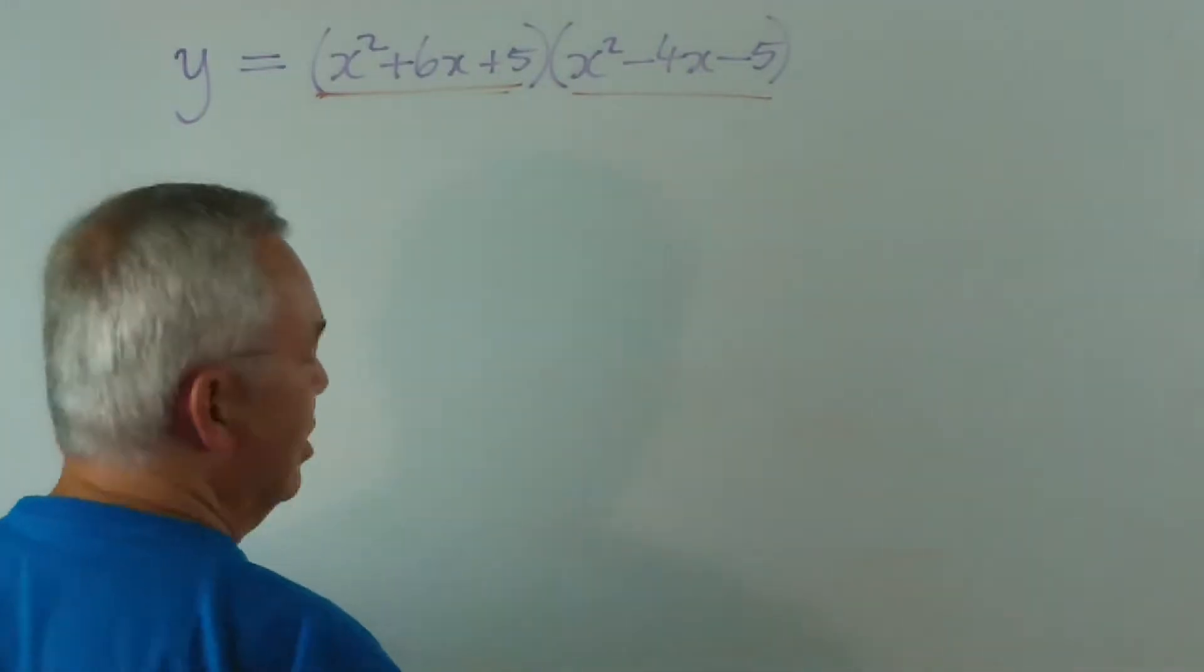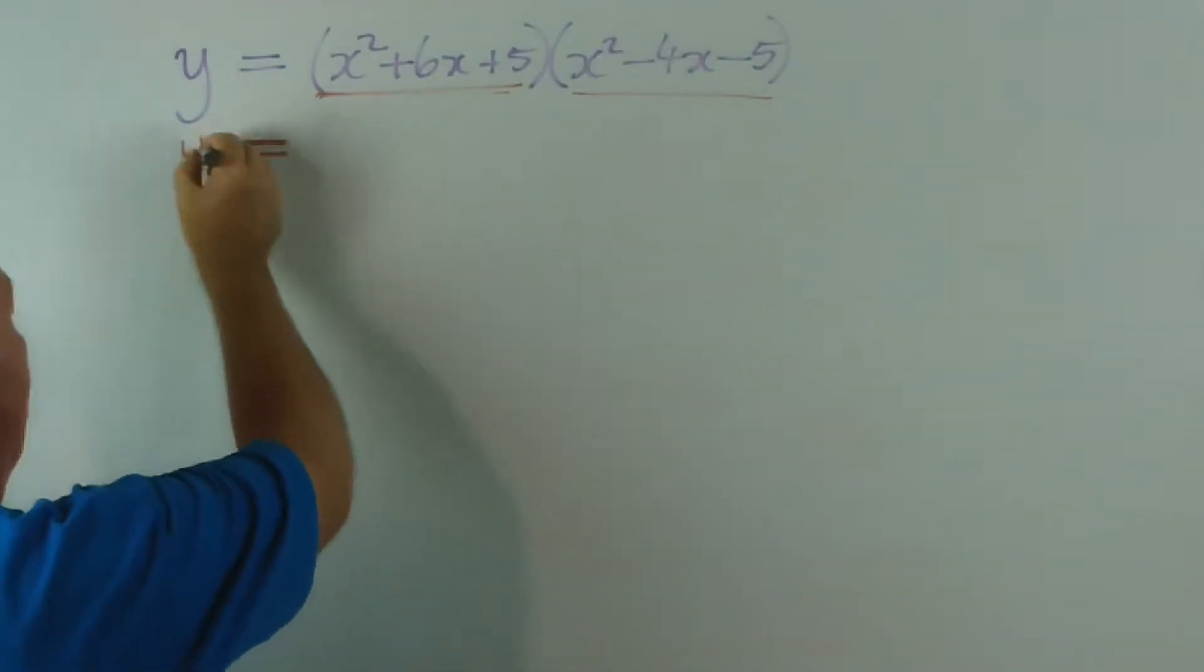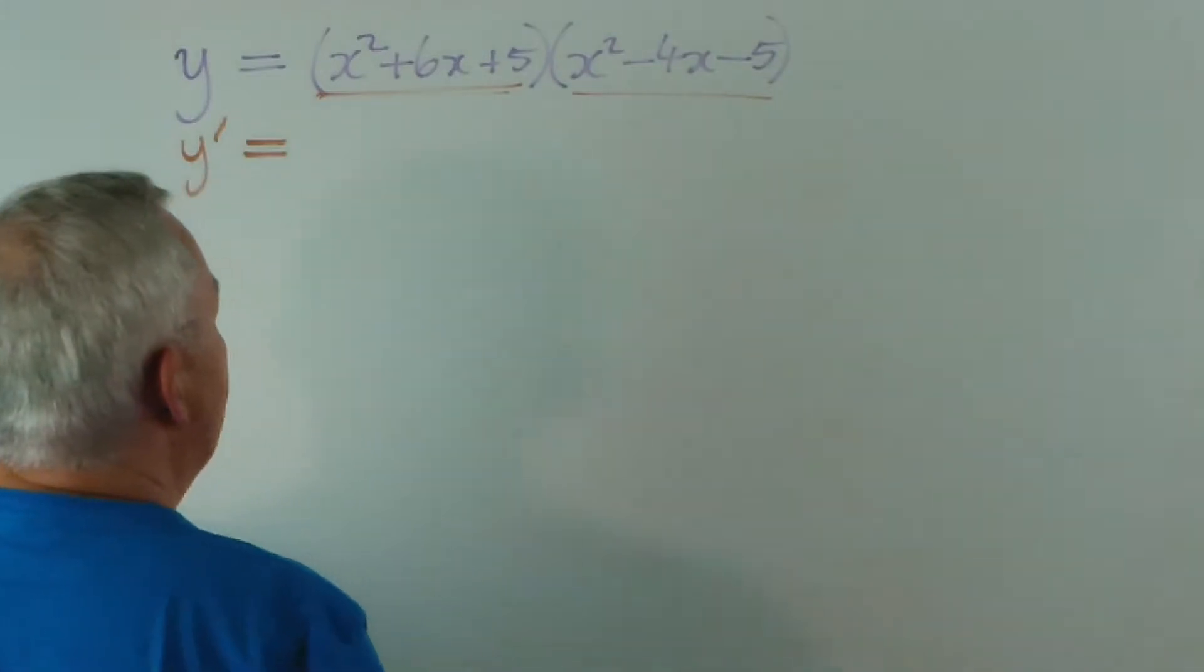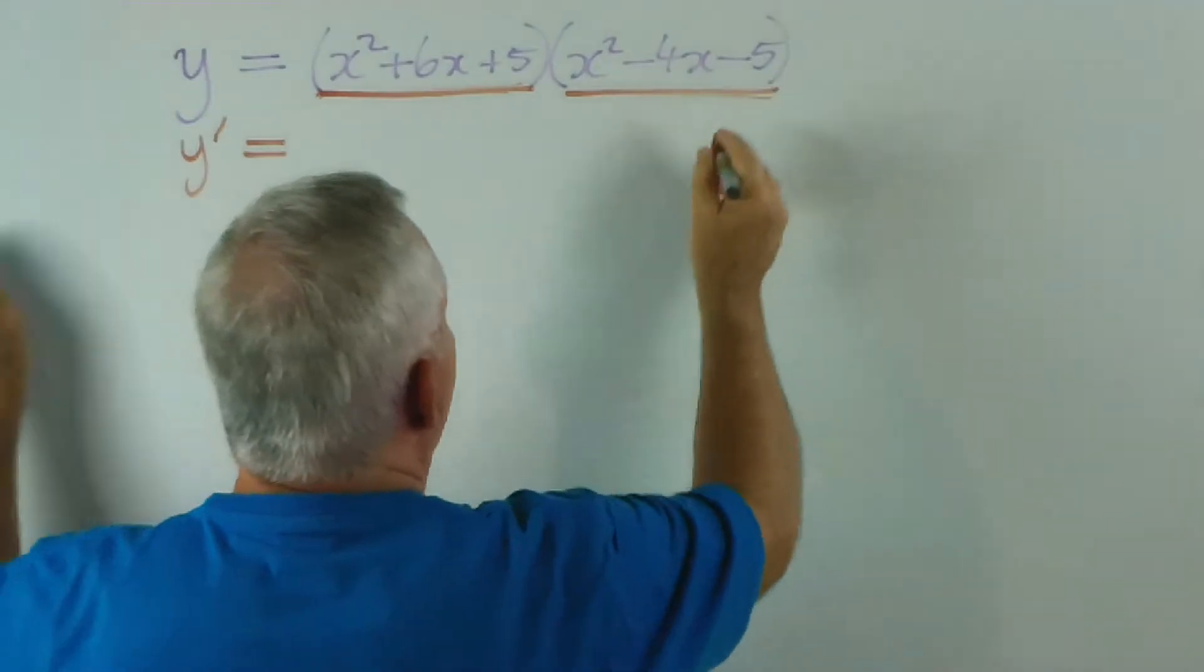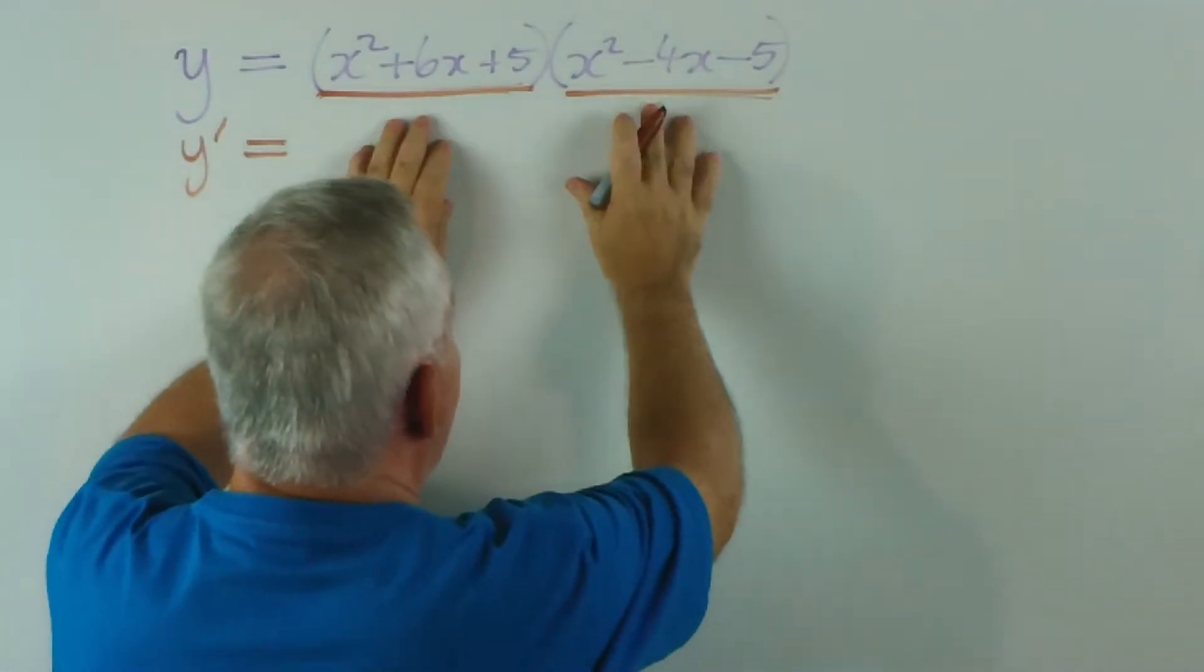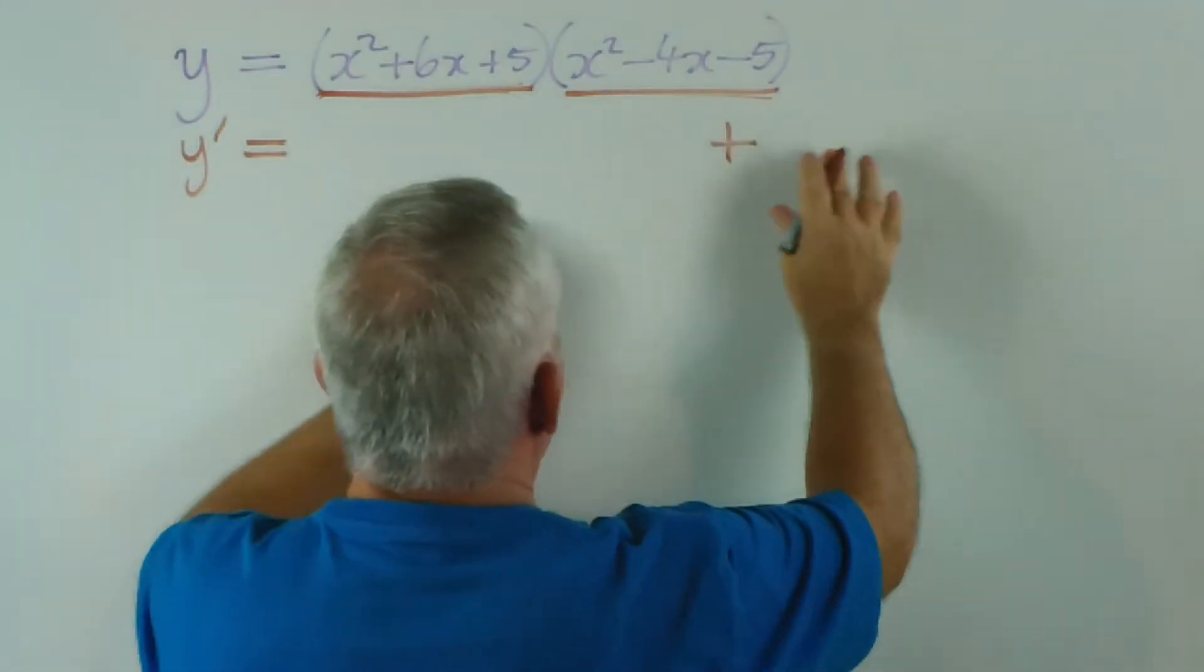Now, both have their merits depending on the complexity of the problem. But, seeing as this is in a product rule exercise, we're going to use the product rule. And, quite frankly, it's probably the easier method here anyway. So, what is the derivative?